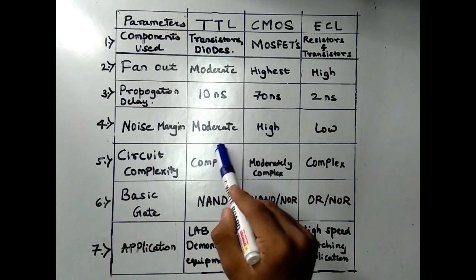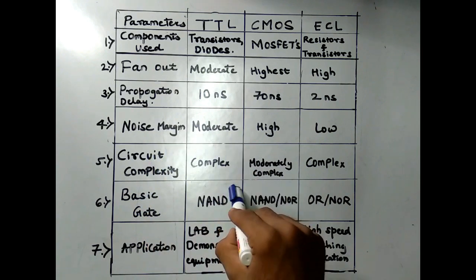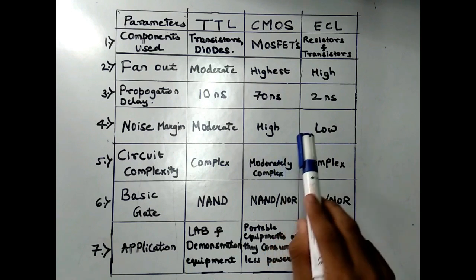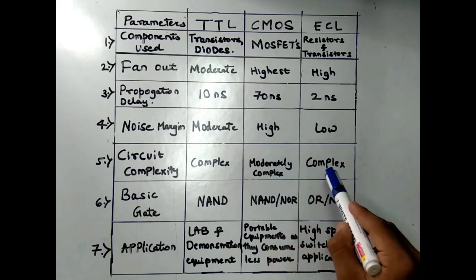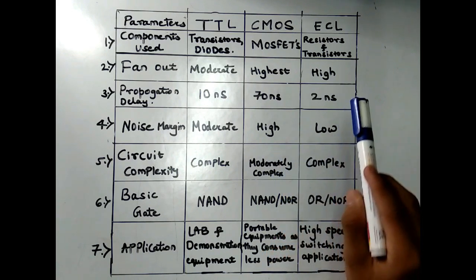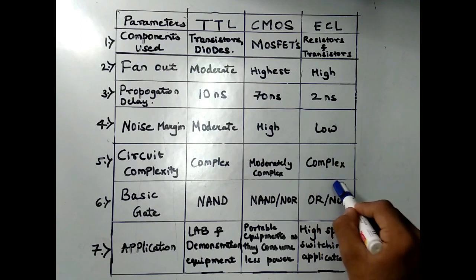The sixth parameter is Basic Gates. The basic gates used in TTL are NAND gates, the basic gates used in CMOS are NAND or NOR gates, and the basic gates used in ECL are OR or NOR gates.